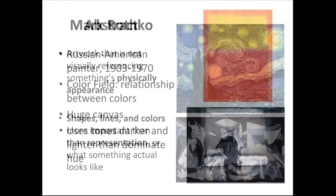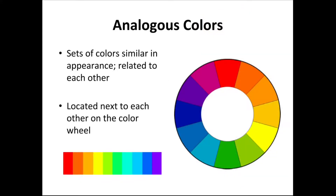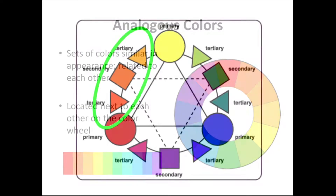We also talked about Mark Rothko. He was a painter who focused on what was known as color field, or relationships between colors, and he used large canvases with tones that were darker and lighter than the dominant hue. He used a lot of analogous colors, which are colors that are similar in appearance next to each other on the color wheel and look aesthetically pleasing together.